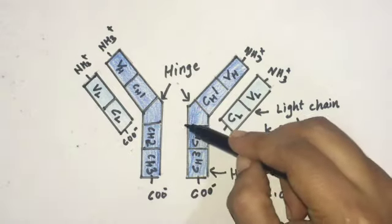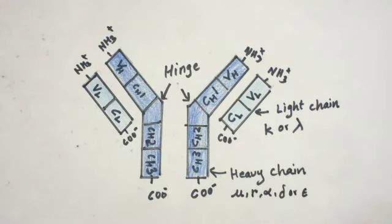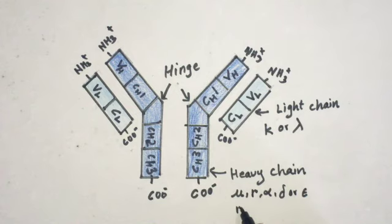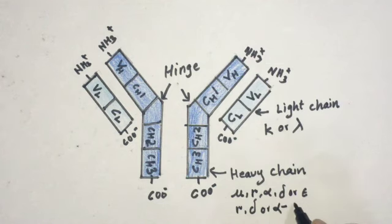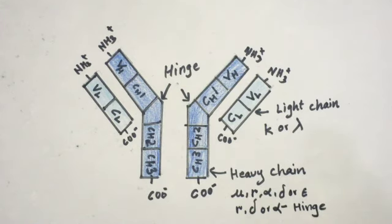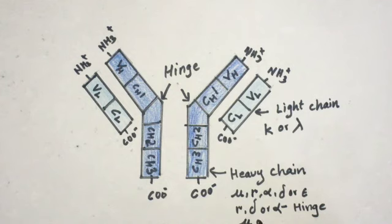The hinge region is only present when the heavy chain is gamma, delta, or alpha — in those cases there is a proline-rich hinge. Proline is an amino acid that makes the structure bend, giving it a kink. That is why there is a hinge region. But if the heavy chain is mu or epsilon, there will be no hinge region.